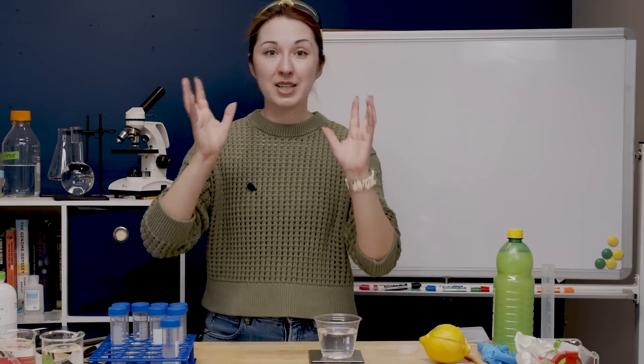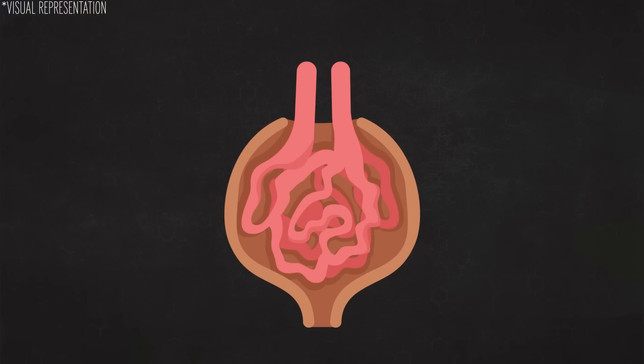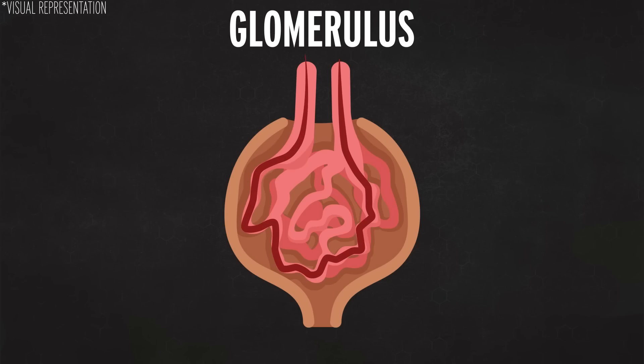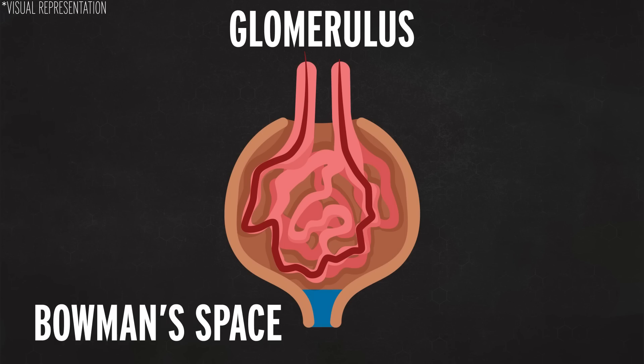But the way that it works is super cool and I love the way that the nephron works because what it does is you have a bundle of capillaries called the glomerulus. Great name. So your kidney pushes all the blood into the glomerulus at high pressure and what happens is that everything other than like big proteins in your blood gets pushed out into a space called the Bowman's space which I also think is a great name.